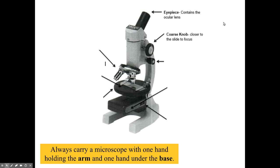The coarse knob is the larger knob. When you turn it, it moves that eyepiece up and down so you can kind of zoom in and out of your viewing.